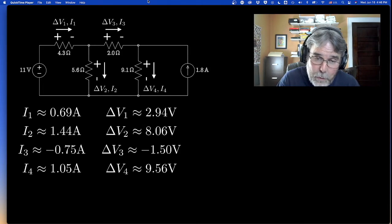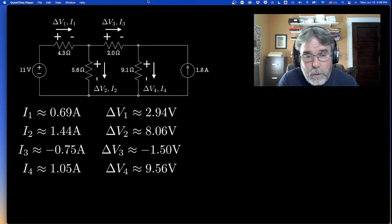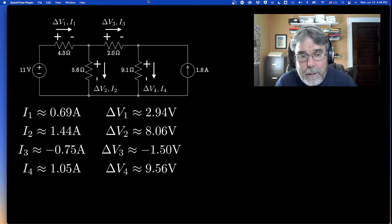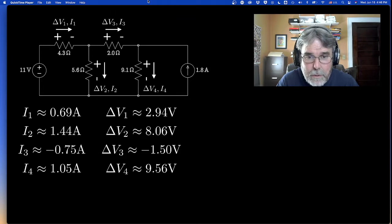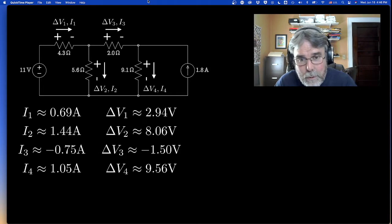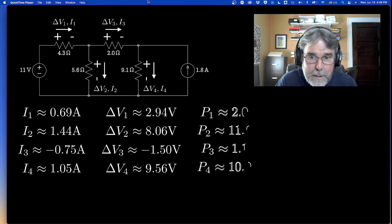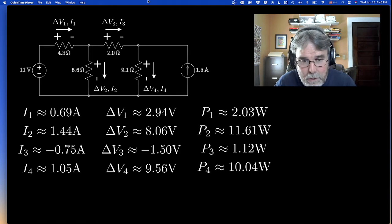The short story is you simply have to multiply all these currents by the corresponding voltage of each resistor to calculate the power being dissipated in each resistor. So 2.94 times 0.69, 8.06 times 1.44, and so on.